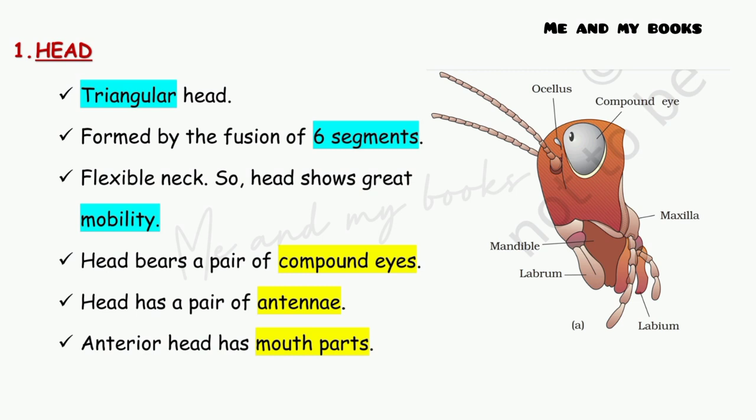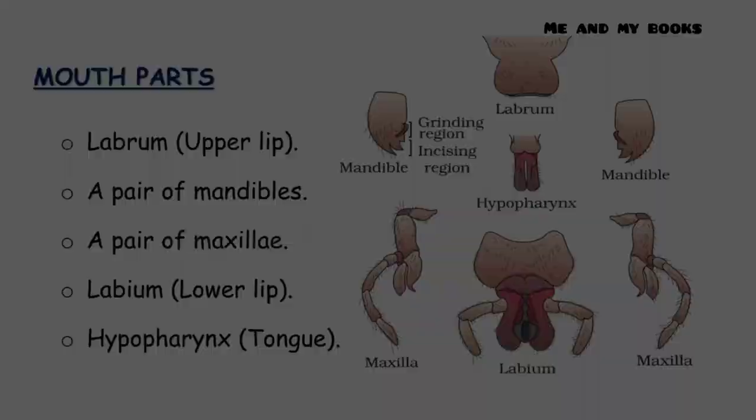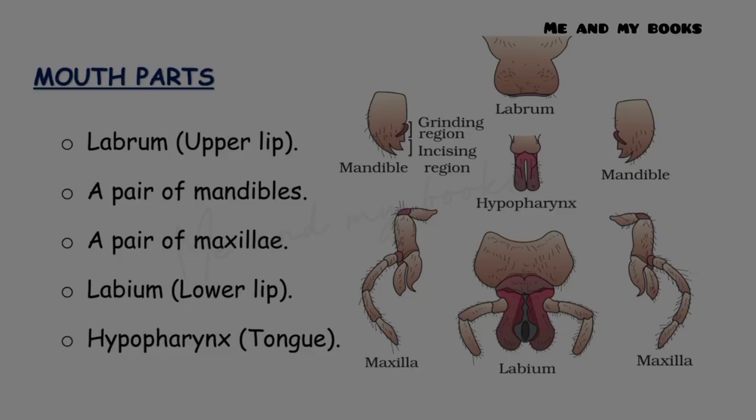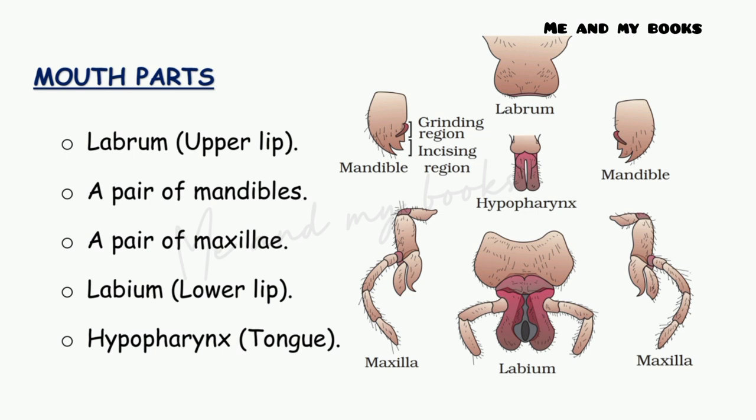The compound eyes help in vision, and the antennae are sensory organs. The mouth parts of the cockroach are an important topic.